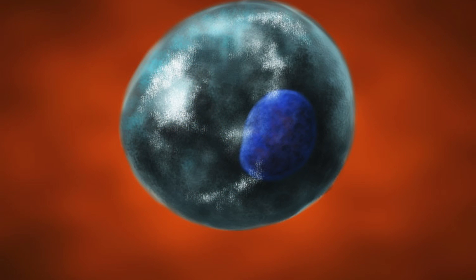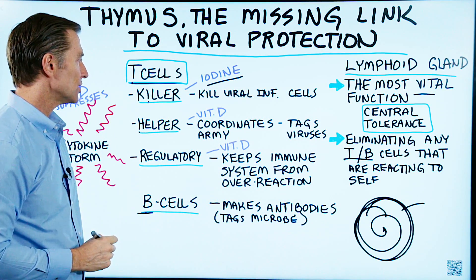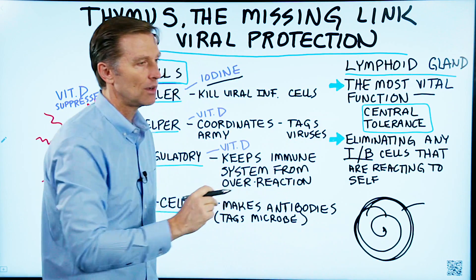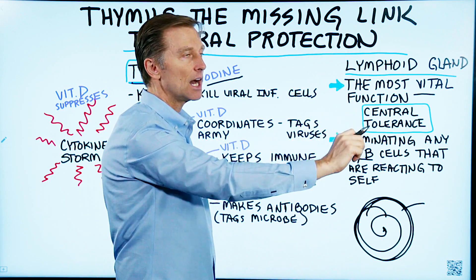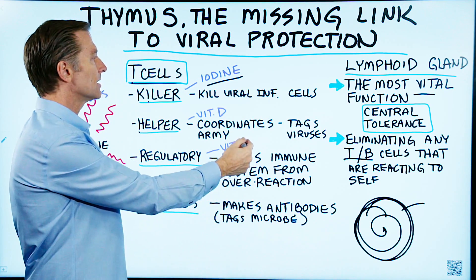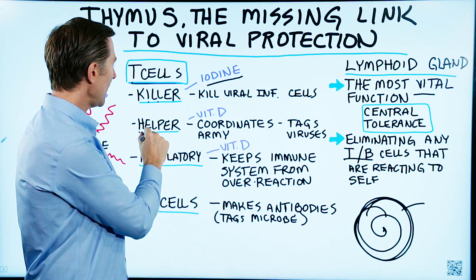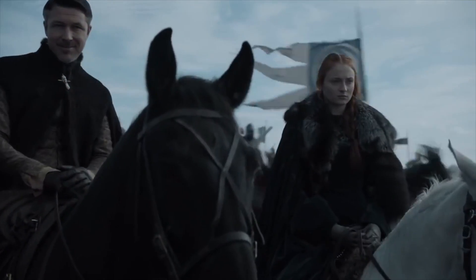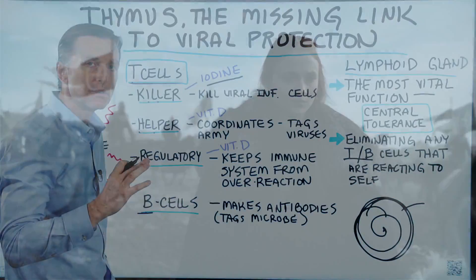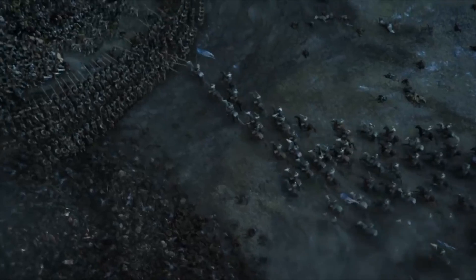Then we have the helper T-cell. The helper T-cell works by coordinating the army. It doesn't necessarily do the killing, but it does tag viruses — it will take spray paint and put a big X on the viruses or pathogens that need to be taken care of. Those messages are sent to the killer T-cells and other cells to do the dirty work. The helper T-cells are the coordinator, in communication with the entire army, doing a lot of recruitment — signaling parts of the immune system to ramp up and get ready.